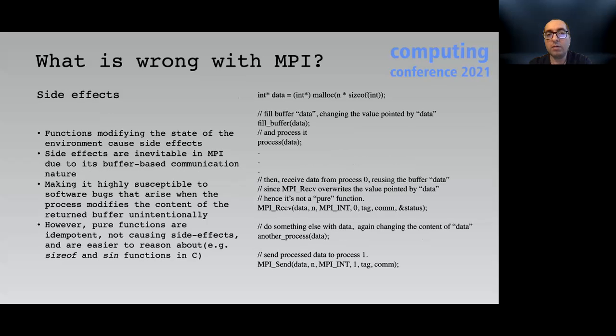Functions that modify the state of the environment such as input parameters cause side effects and side effects are inevitable in MPI due to its buffer-based communication, making it highly susceptible to software bugs that arise when the process modifies the content of the returned buffer unintentionally. The functional programming paradigm solves this problem via pure functions which are idempotent and do not cause any side effects. Pure functions are independent of the program's execution environment in producing results. Such property also considerably simplifies writing parallel programs.